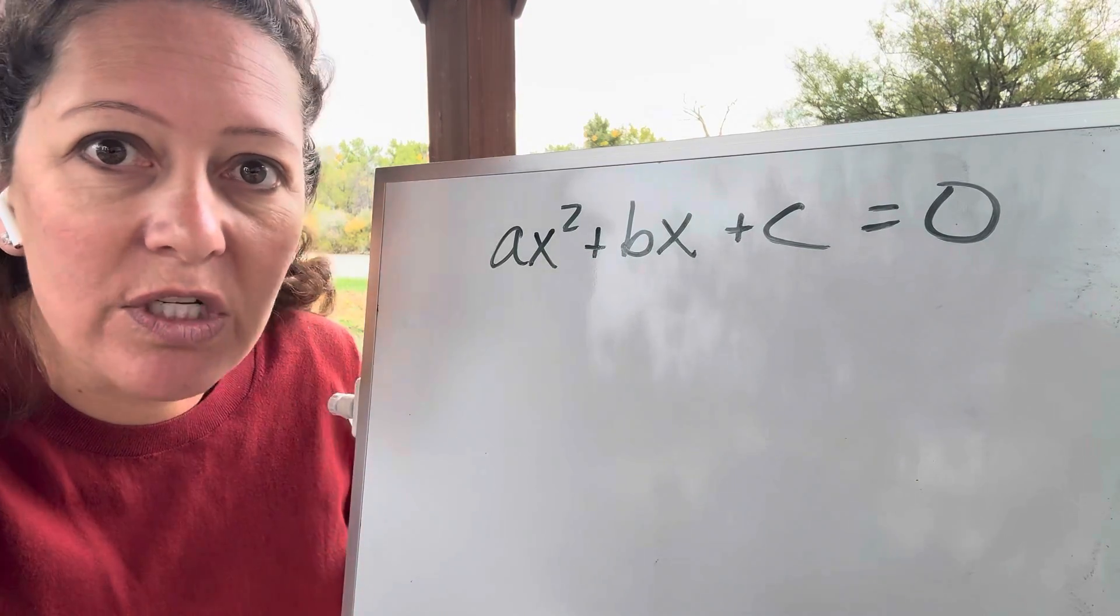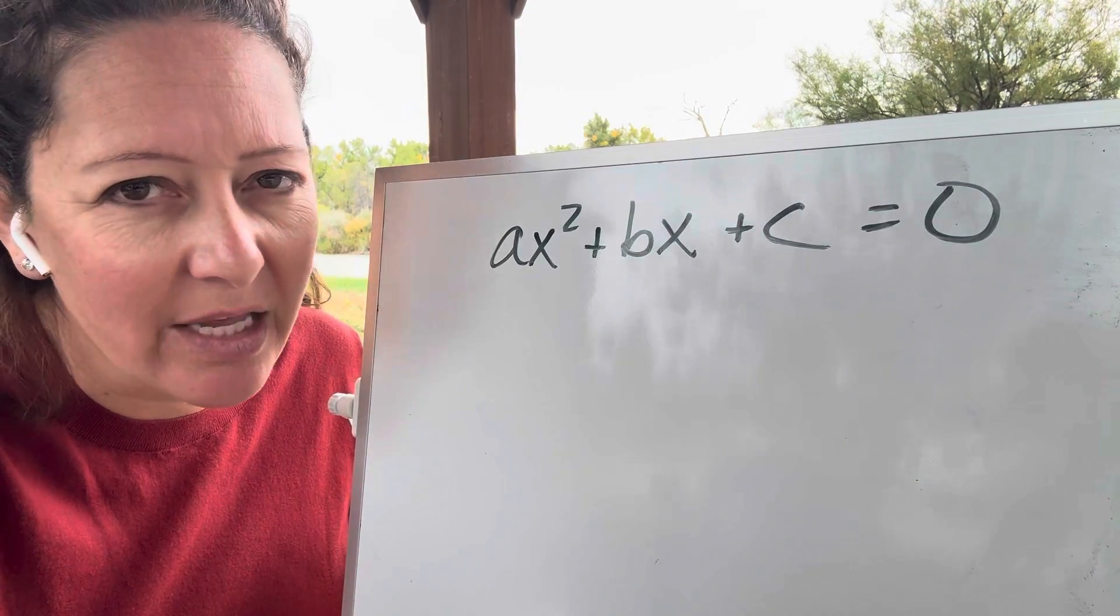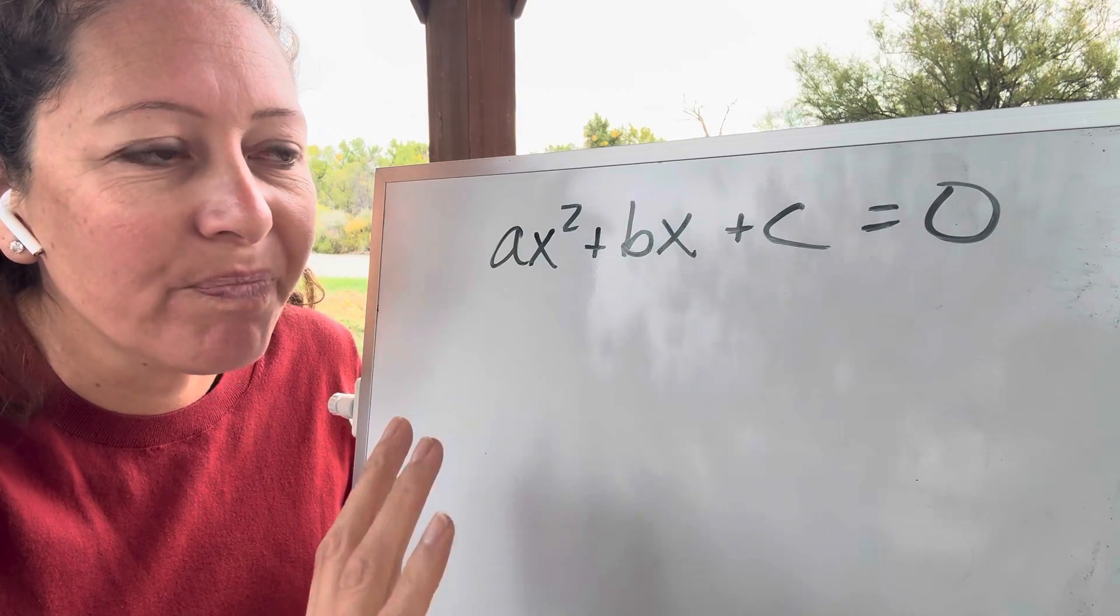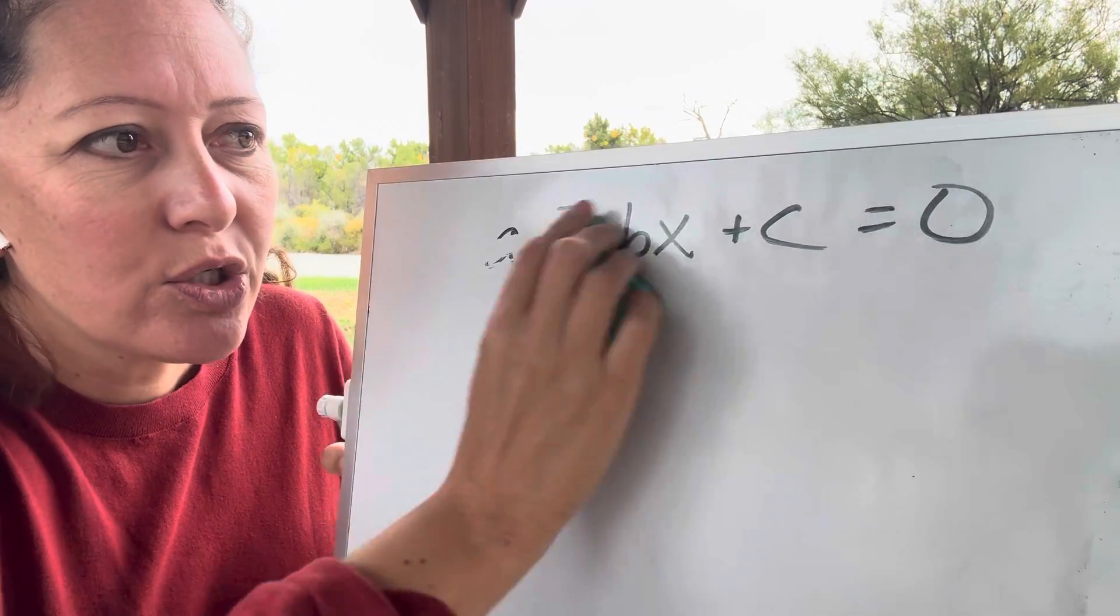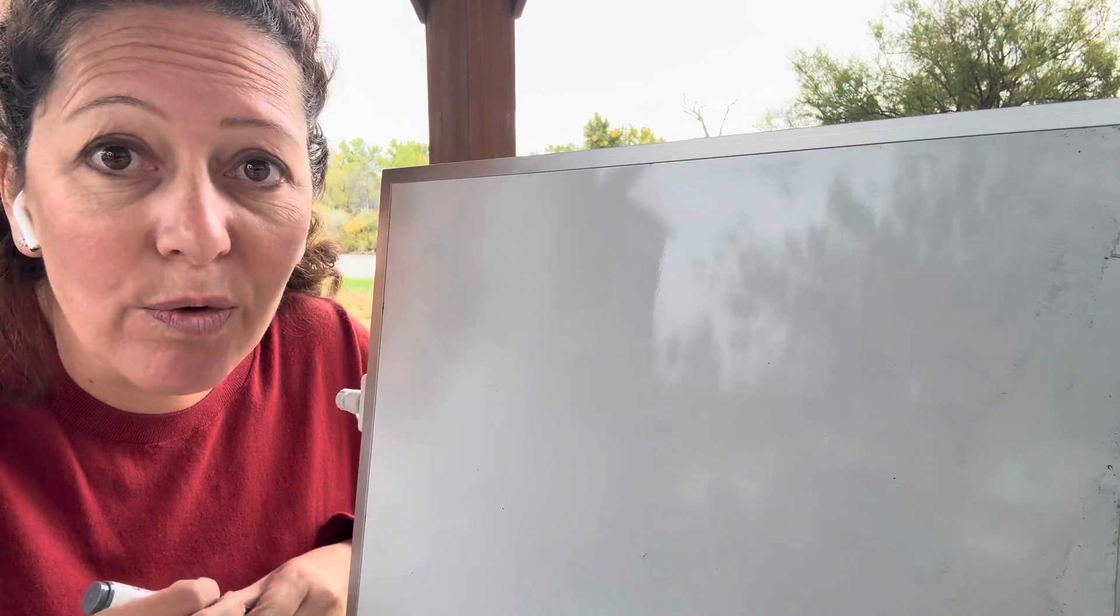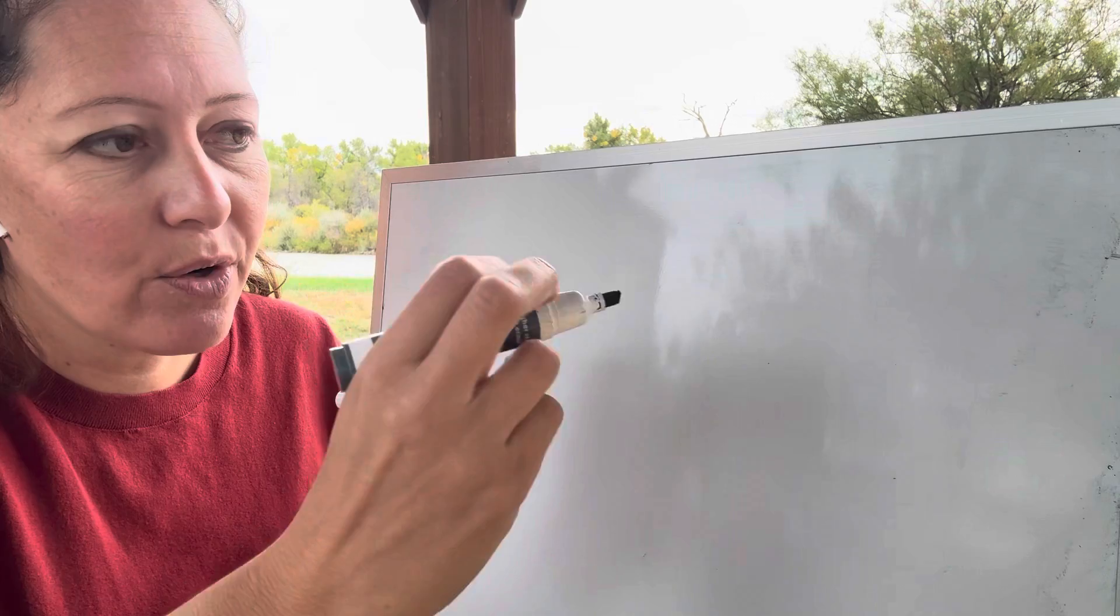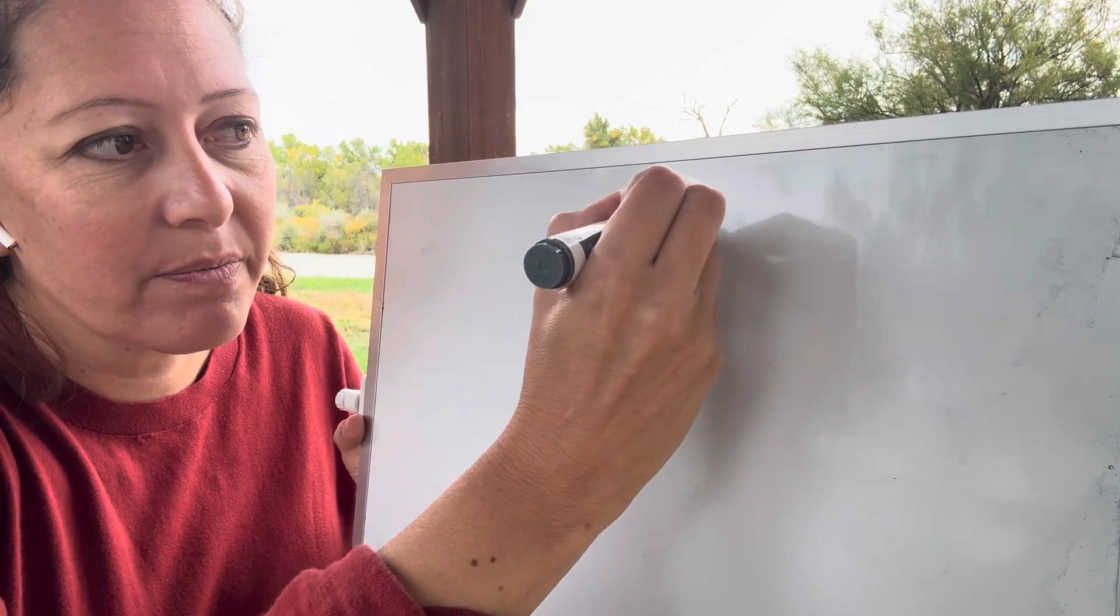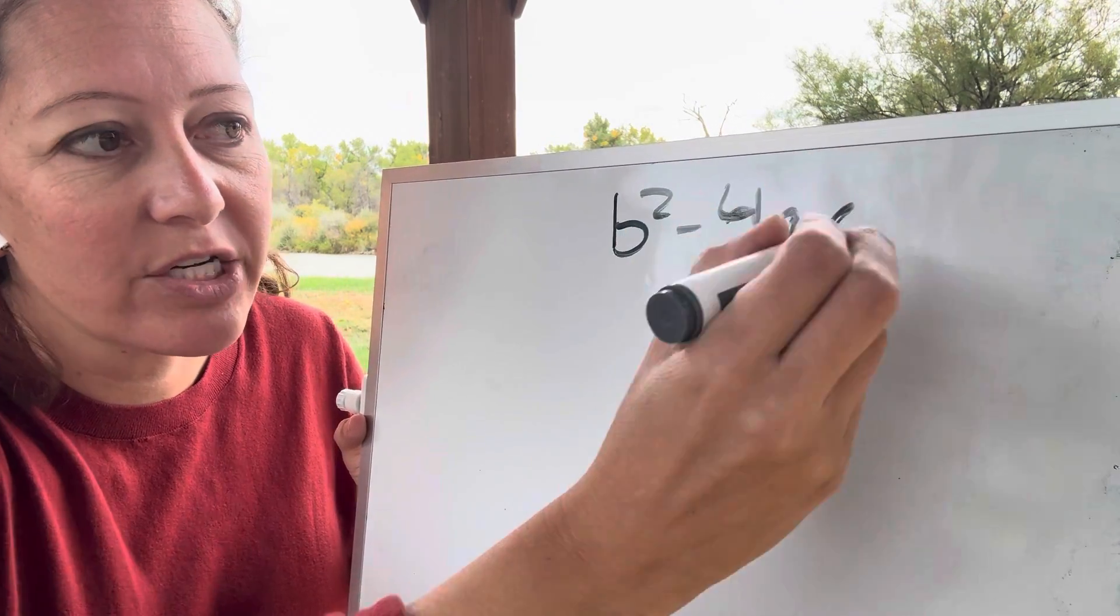They're also seeing the discriminant, which is part of the quadratic equation. Yet they're not given the quadratic equation this week. So because it's probably seen as being too big of an item for them. But it is going to be on their work problems. So the discriminant is the b squared minus 4ac part of the quadratic equation.